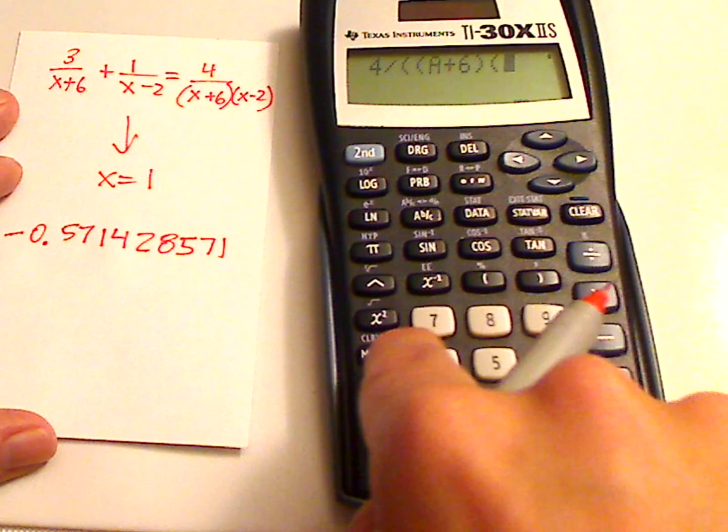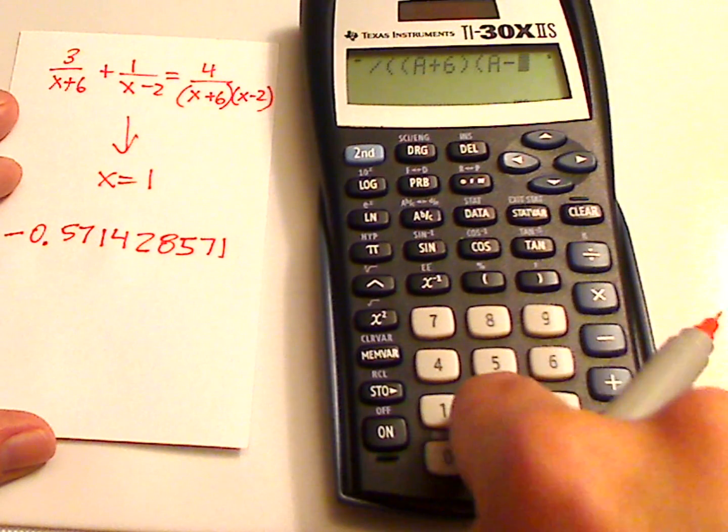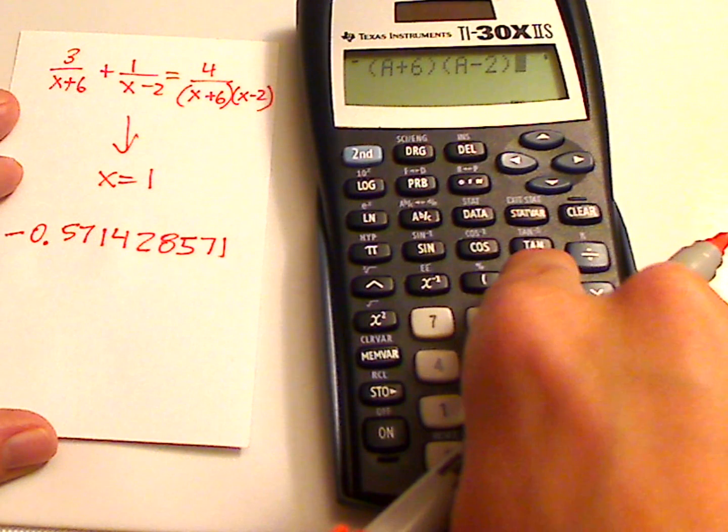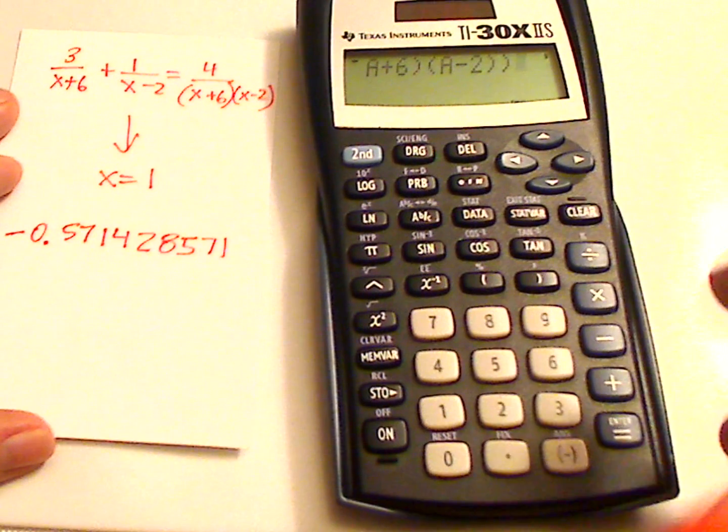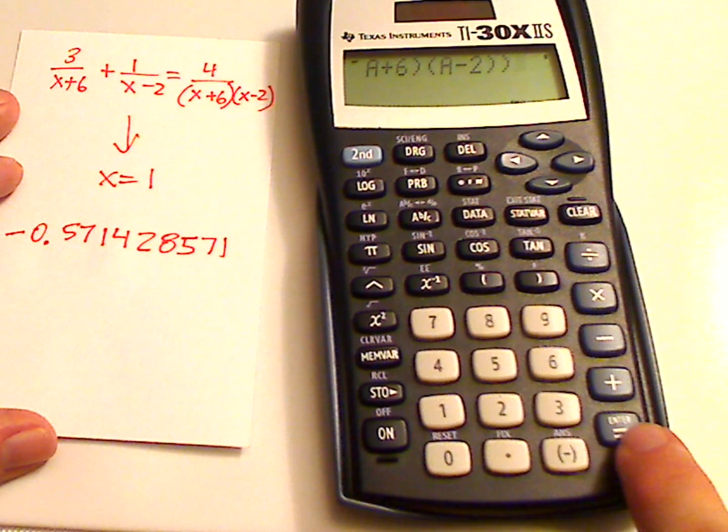So you're going to put one set of parentheses and then within those parentheses put the denominator. So that would be A plus 6, parentheses, A minus 2, close parentheses, and then close parentheses again for the denominator. Then push enter.